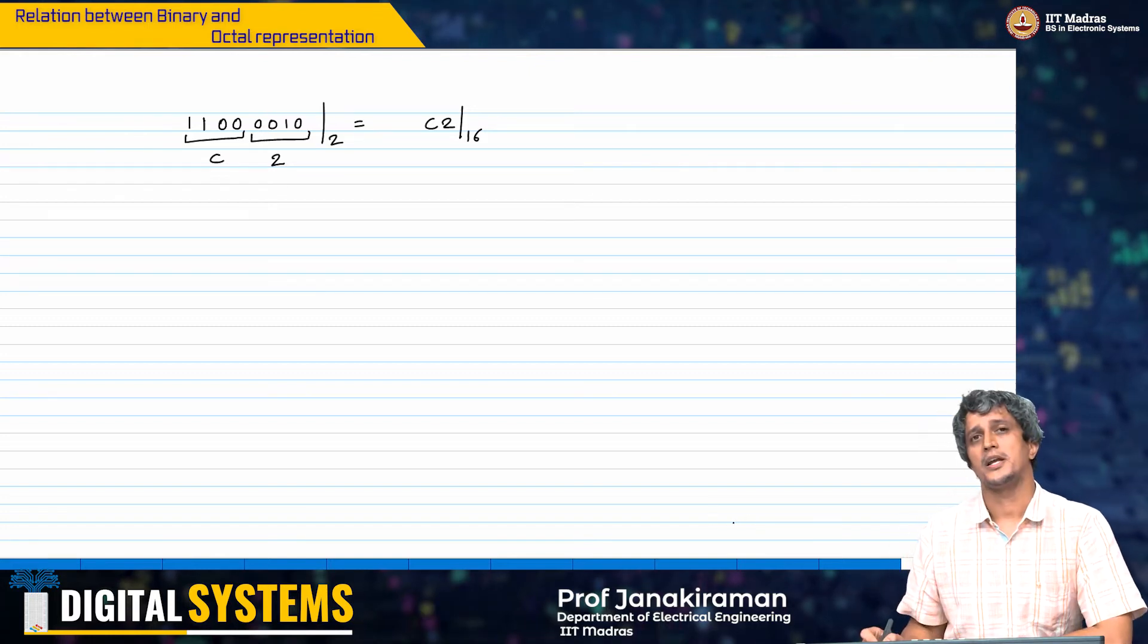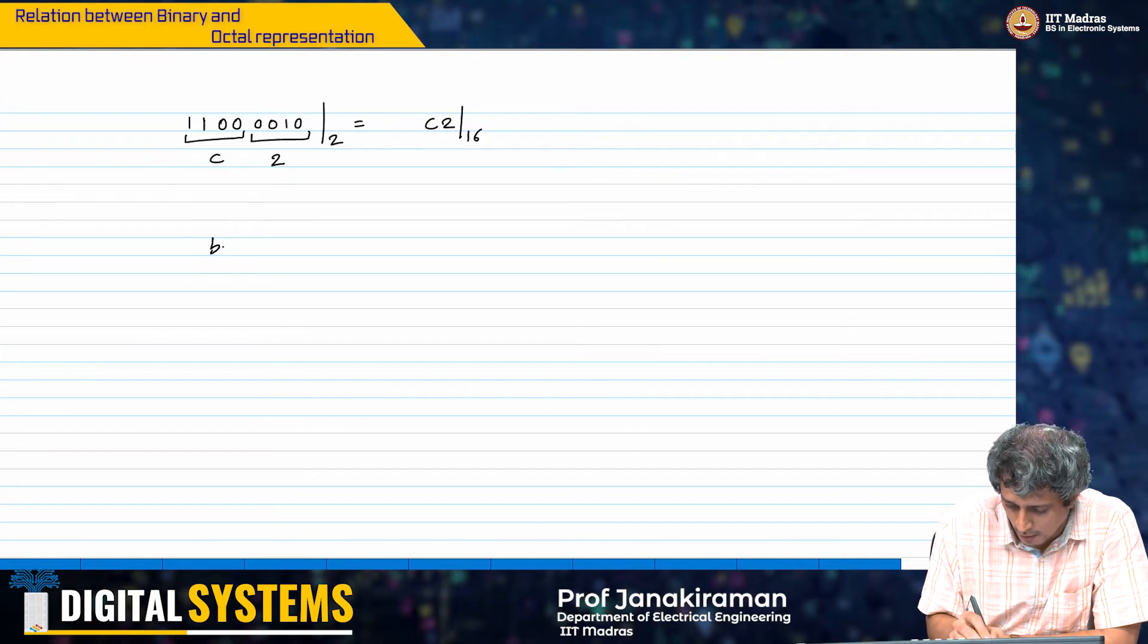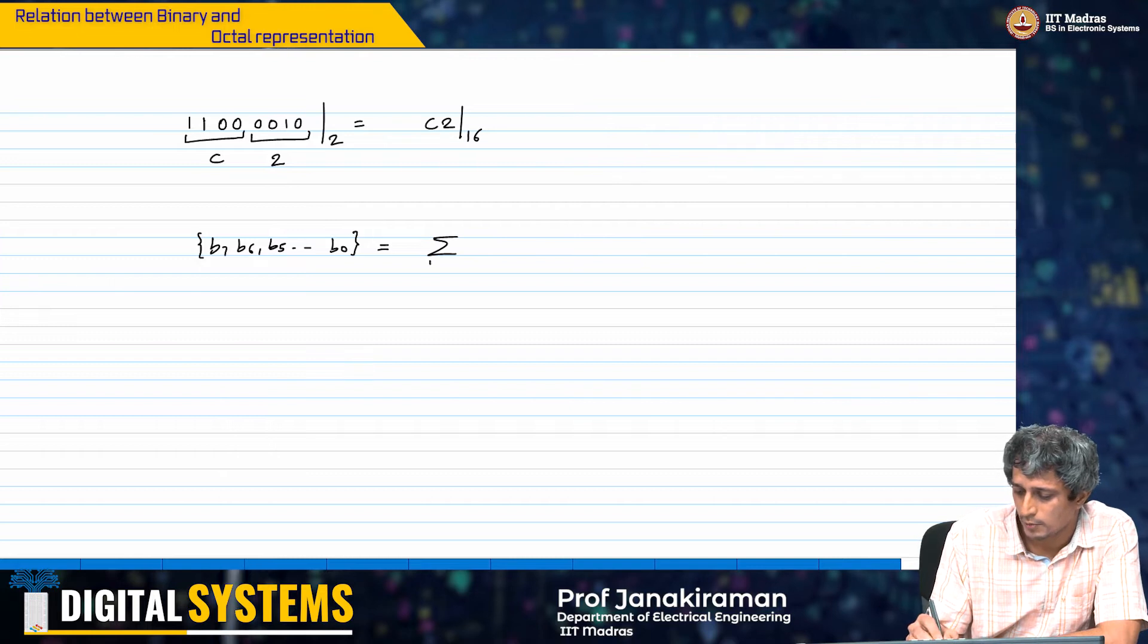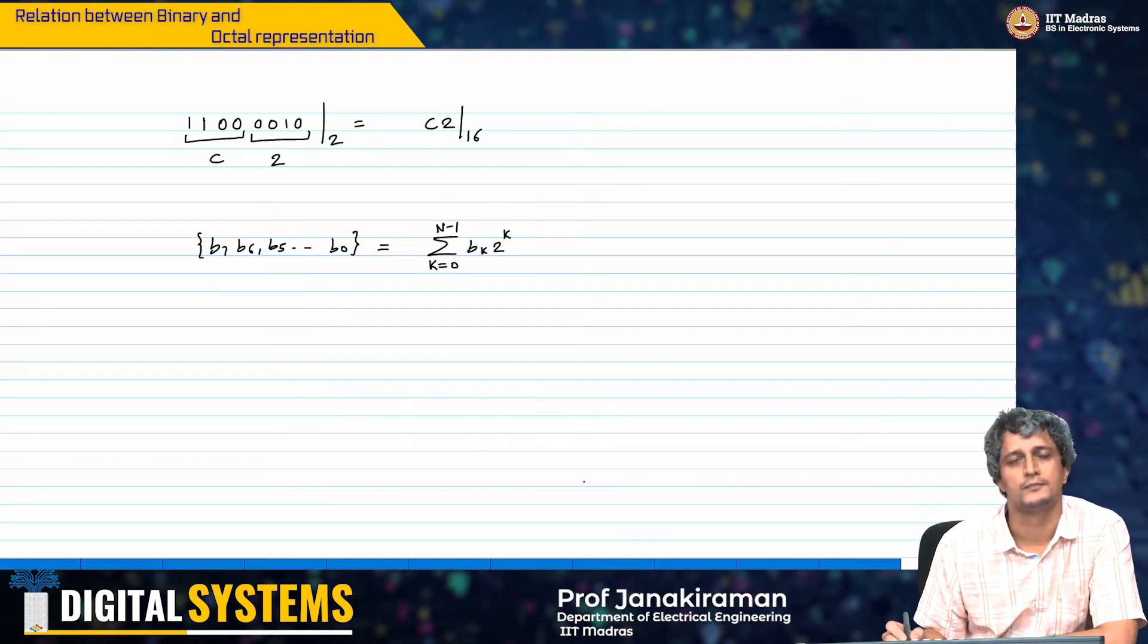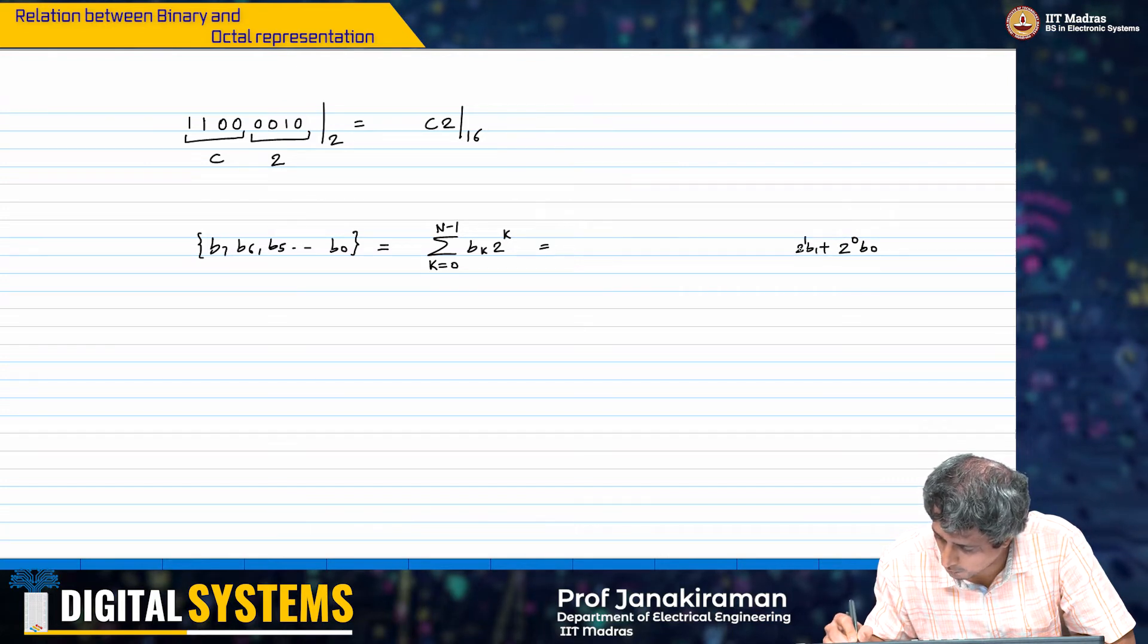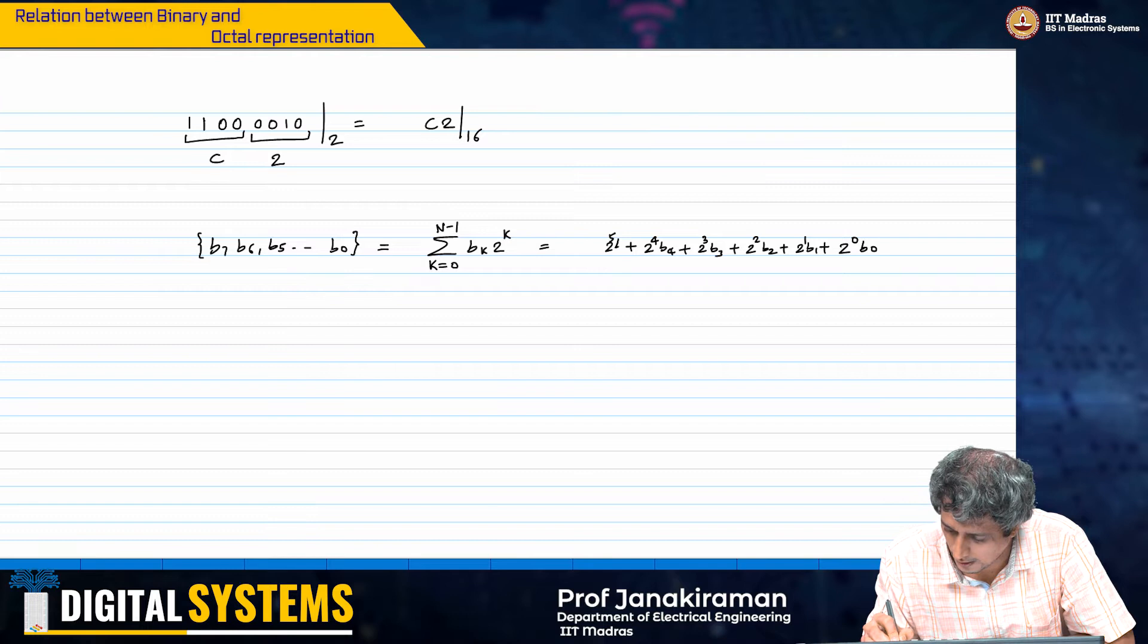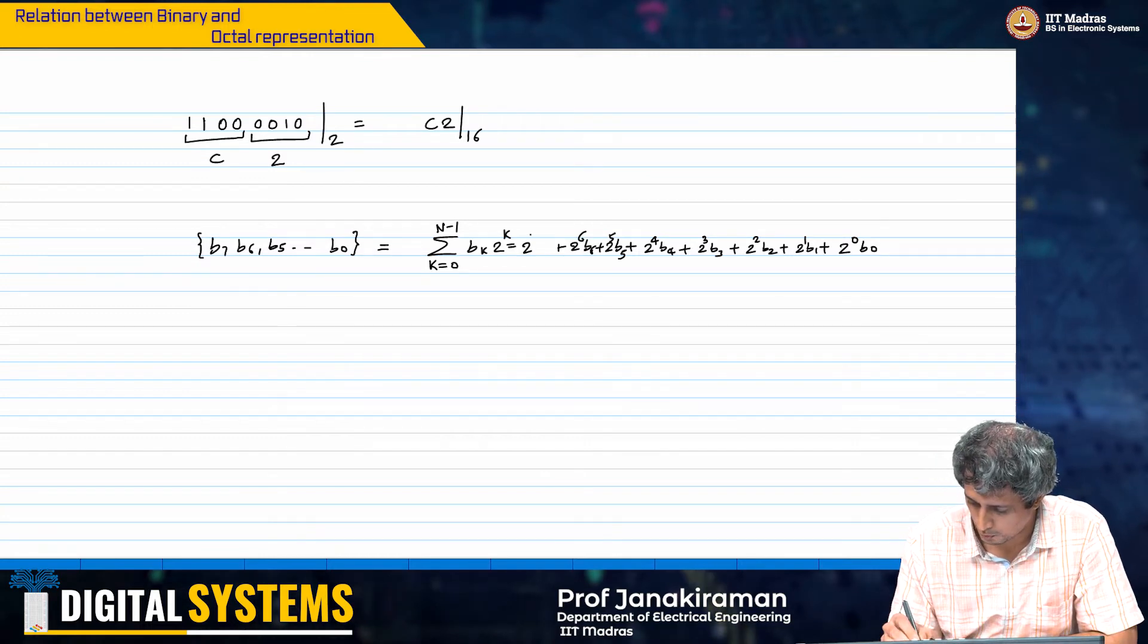Let us see what happens if I want to represent the same number in the octal number system. What do I do? I basically come here, I take this b7, b6, b5 all the way to b0, that is your binary representation, the 8-bit binary representation and this can be represented as k equal to 0 to n minus 1, n equal to 8 here, bk 2 power k.